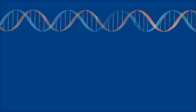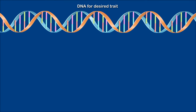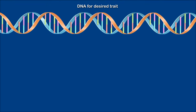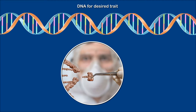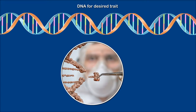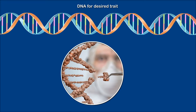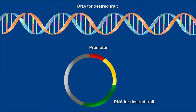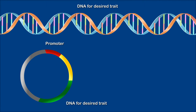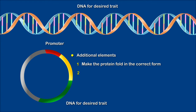Creating man-made DNA. The gene of the desired trait that one requires to be expressed is first painstakingly identified by the scientists through a screening process. This may be from the same species or some other species, or the modification of an existing gene. The gene may be modified by adding a promoter that makes expression in the target species suitable, or to make the protein fold in the correct form or be transported to the site of action in a cell or outside.